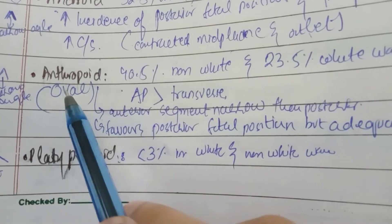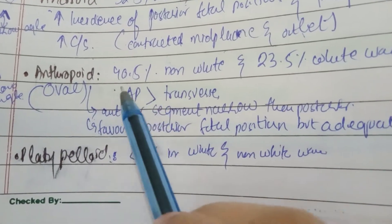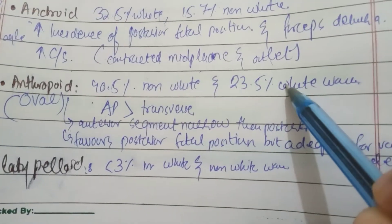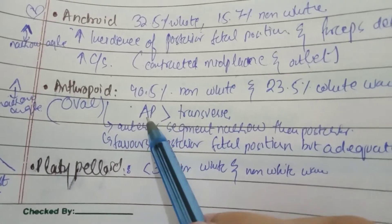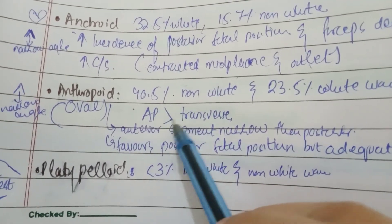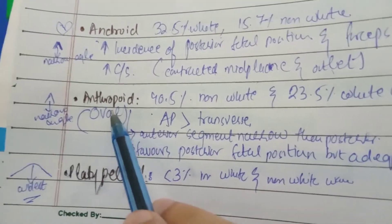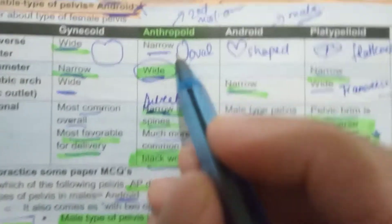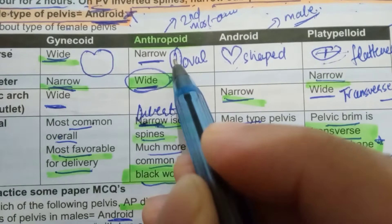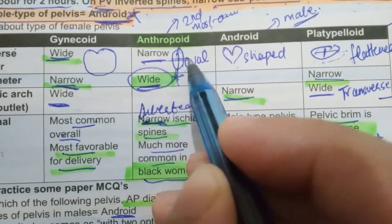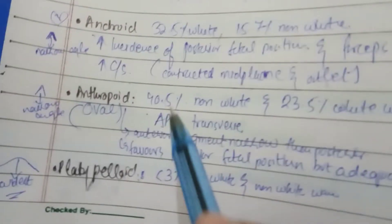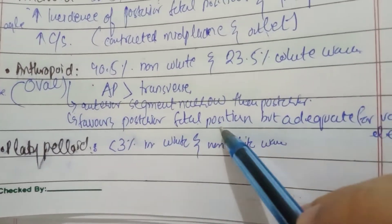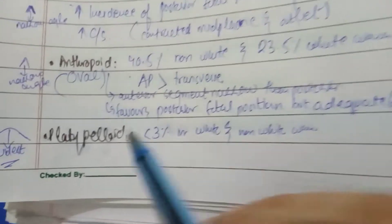Moving on to anthropoid pelvis: 40.5% in non-white females, second most common in non-white and third most common in white females at 23.5%. The anterior posterior diameter is more than the transverse diameter in anthropoid. This is oval. We have an anterior posterior diameter, this is more as compared to transverse diameter. Now anterior segment is narrow than the posterior one. Favors posterior fetal position but adequate for vaginal delivery.